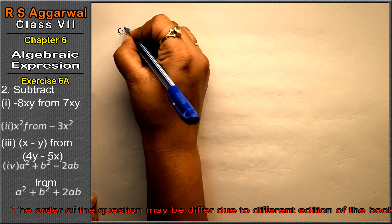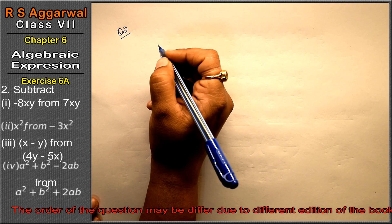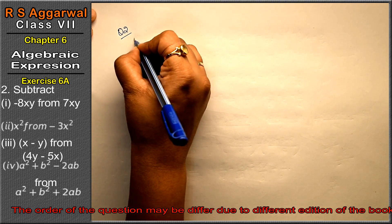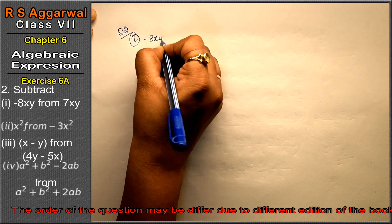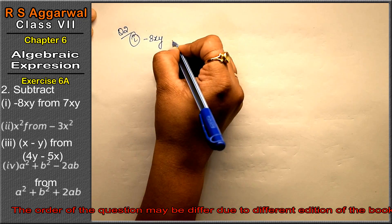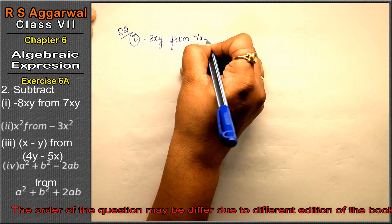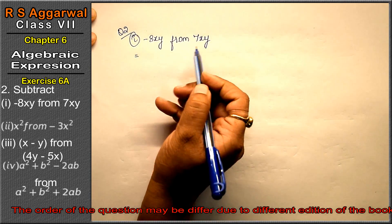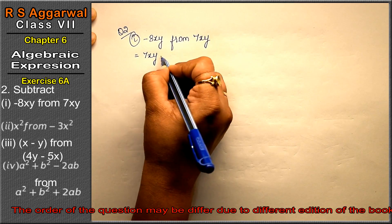Let's do question number 2 of Exercise 6a, that is algebraic expressions. Question number 2, first part: subtract -8xy from 7xy. Friends, in subtraction, the digit after 'from' comes first, then the minus sign.